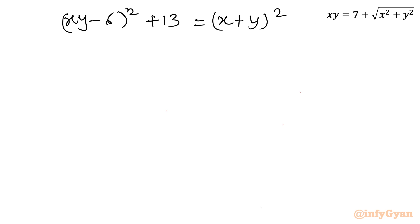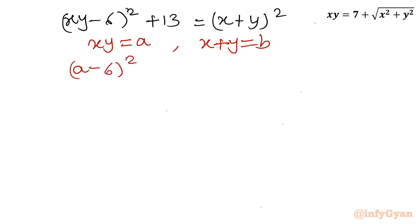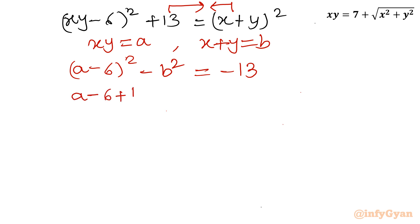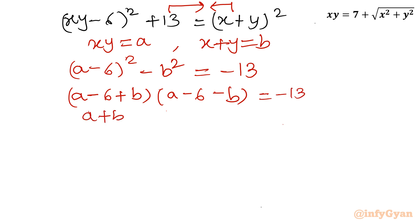Now I'll use substitution: let a = xy and b = x + y. The equation becomes (a − 6)² − b² = −13. Rearranging using the difference of squares formula: (a − 6 + b)(a − 6 − b) = −13, which we write as (a + b − 6)(a − b − 6) = −13.